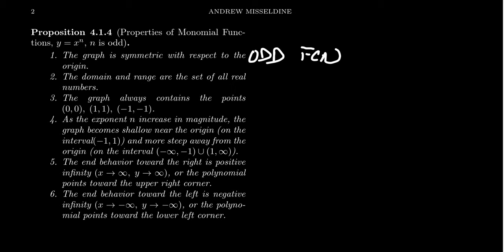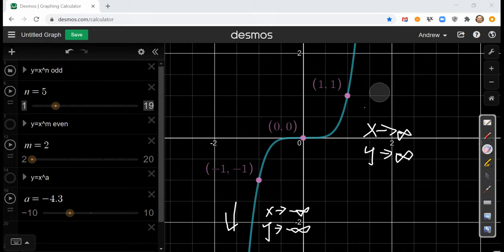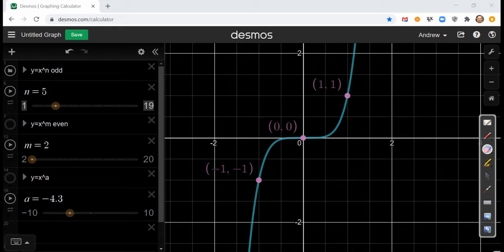The domain is all real numbers. This graph will contain (0, 0), (1, 1), and (-1, -1). As the exponent n increases in magnitude, the graph becomes more shallow near the origin — flatter — and gets steeper when we get away from the origin, past 1 or negative 1. This gives us the standard picture for an odd degree monomial: flat near the origin, steep on both sides.